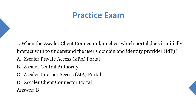Question 1: When the Scalar Client Connector launches, which portal does it initially interact with to understand the user's domain and identity provider? A. Scalar Private Access Portal. B. Scalar Central Authority. C. Scalar Internet Access Portal. D. Scalar Client Connector Portal. Answer: B.